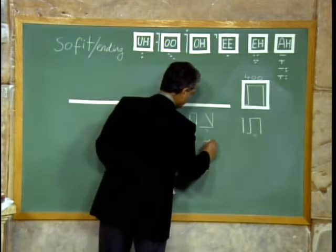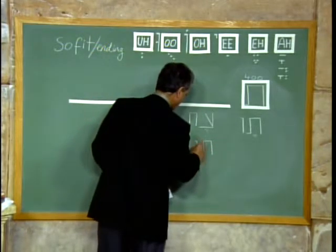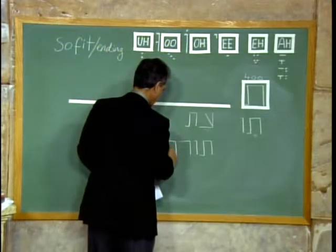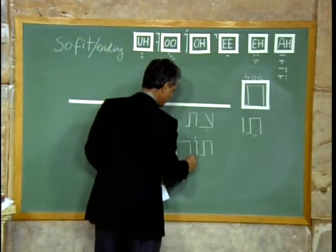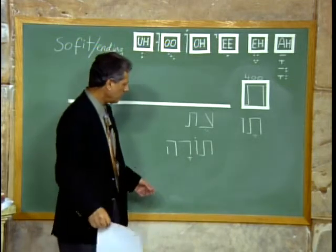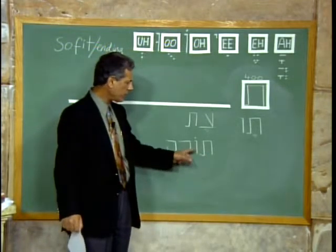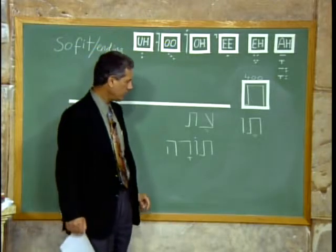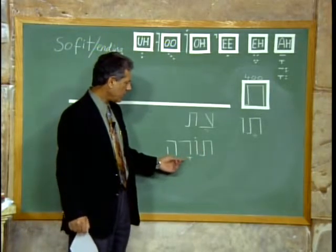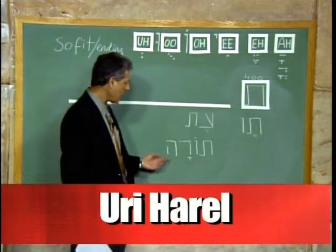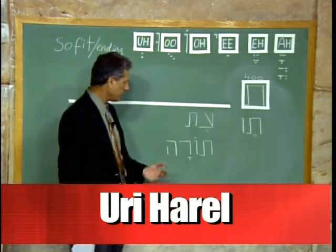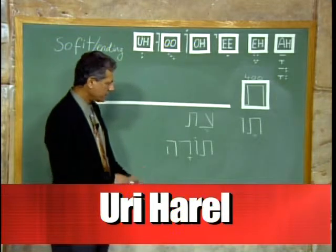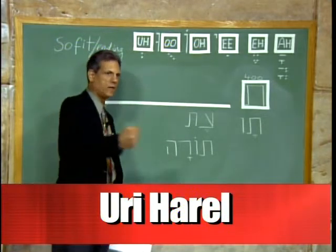Here is another word. We have a Tav, Vav, Resh, and a He. Some of you probably heard this word. We have a Tav and a Vav next to it with a dot on top — dot on top creates the sound of O — so we have To. Then a Resh with an A sound and a He that has no sound: that's Torah. So those of you who have heard about the Torah, that's how you spell it.